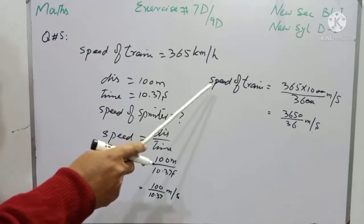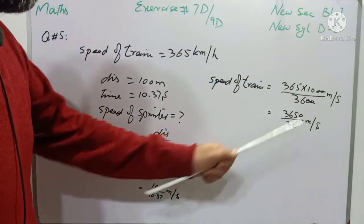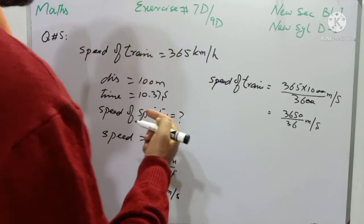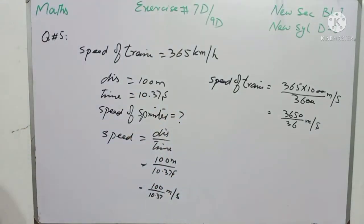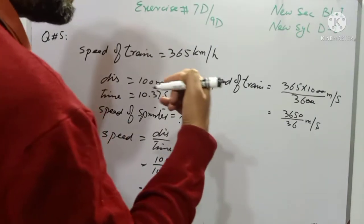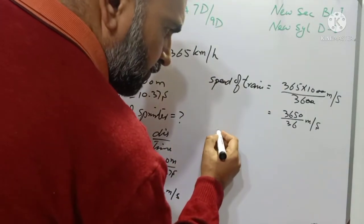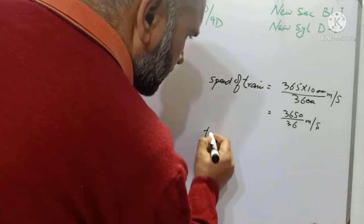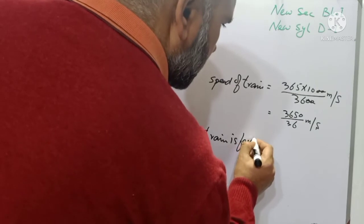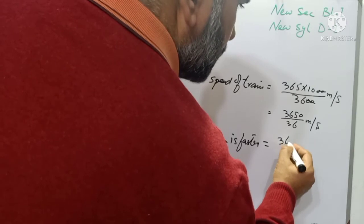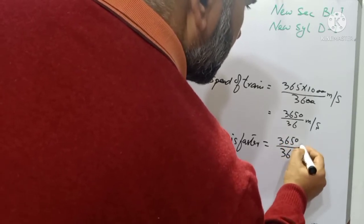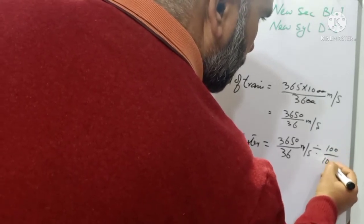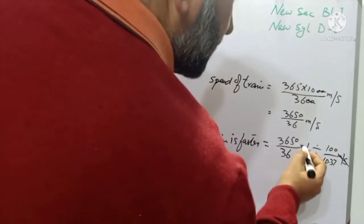And students, we have to find that how many times train is faster. So we will divide the speed of the train with the speed of the player, and that will be the required answer. So, train is faster: the average speed of train will be 3650 over 36 meter per second, divided by the average speed of the player, and that is 100 over 10.37 meter per second. Meter per second will be cancelled with meter per second.